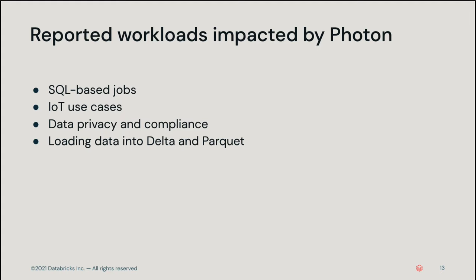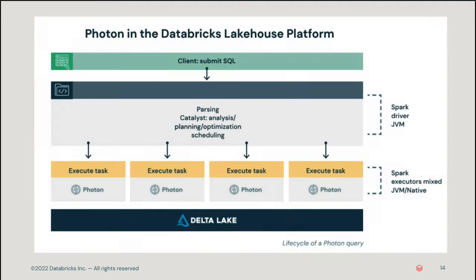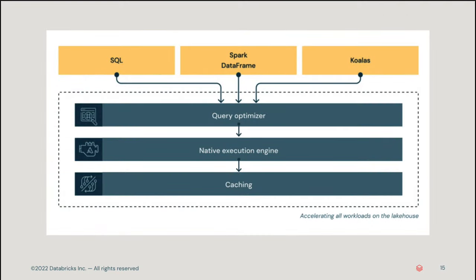Some customers have reported observing significant speed-ups using Photon on workloads such as SQL-based jobs, Internet of Things use cases, data privacy and compliance, and loading data into Delta and Parquet. Photon is compatible with the Apache Spark DataFrame and SQL APIs to allow workloads to run without having to make any code changes. Photon coordinates work and resources, transparently accelerating portions of SQL and Spark queries without tuning or user intervention. While Photon started out focusing on SQL use cases, it has evolved in scope to accelerate all data and analytics workloads. Photon is the first purpose-built Lakehouse engine and is a key feature for data performance in the Databricks Lakehouse platform.